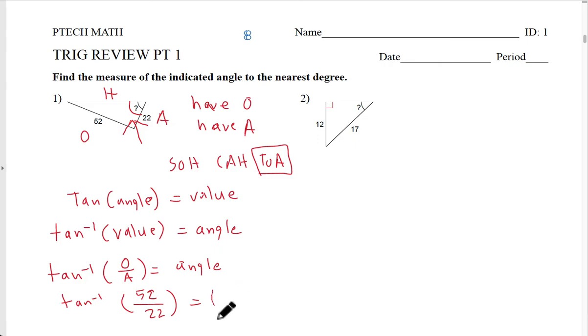I'm just writing what it is: 67.0679. And they want me to round to the nearest degree, so if they want me to round to the nearest degree, that's just going to be 67. That's my final answer.